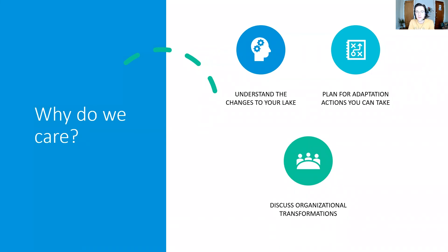Third and finally, discuss organizational transformations. If you notice that a change is happening to your system and adaptation doesn't look like it's going to work, what are things you can do to transform as an organization? Do you need to raise more funds so you can commission a lake management plan? Do you need to increase volunteerism so you have more monitors at the boat landing? These are three different steps you can take as an organization: to understand, to adapt, and to transform.